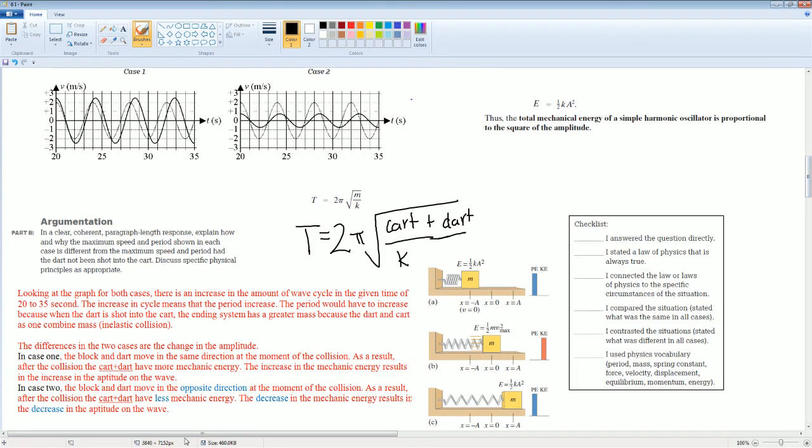Second part. The difference in the two cases is actually the change in the amplitude. In case 1, the block and the dart moves in the same direction at the moment of collision. So, it went from here, and it went from here, and they're all going this way. As a result, after the collision of the cart dart having more mechanical energy. The increase in mechanical energy is an increase in the amplitude of the wave. So, as e is equal to one half k a squared. If e goes up, a also has to go up. This makes sense because this was your initial. And, look on top here. This is your final. Do you see how it went up?